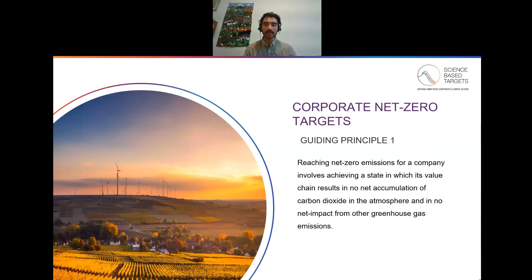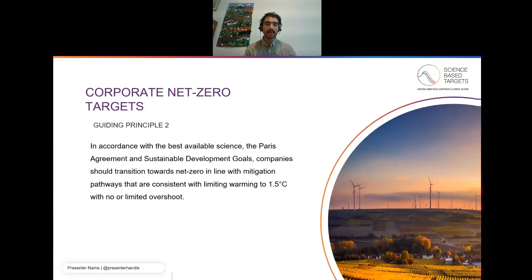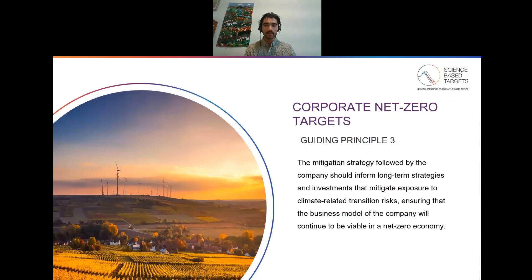In our publication last year, the foundations of net zero target setting, we refined the guiding principles and incorporated the feedback, ending up with three guiding principles instead of four. The first principle is that reaching net zero emissions for a company involves achieving a state in which its value chain results in no net accumulation of CO2 in the atmosphere and no net impact from other greenhouse gas emissions. The second is that in accordance with the best available science, the Paris Agreement, and Sustainable Development Goals, companies should transition toward net zero in line with mitigation pathways that limit warming to one and a half degrees with no or limited overshoot. The third and final guiding principle is that the mitigation strategy followed by the company should inform long-term strategies and investments that mitigate the company's exposure to climate-related transition risks, ensuring that its business model will continue to be viable in a net zero economy.